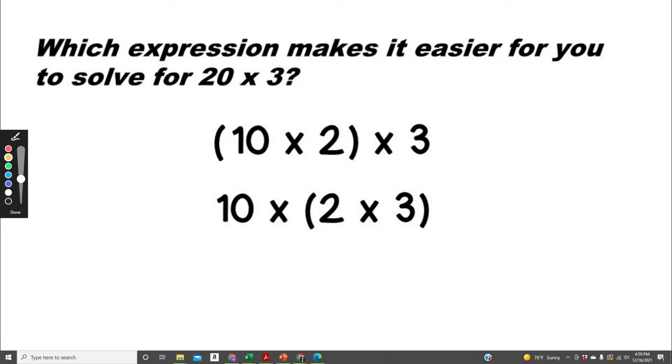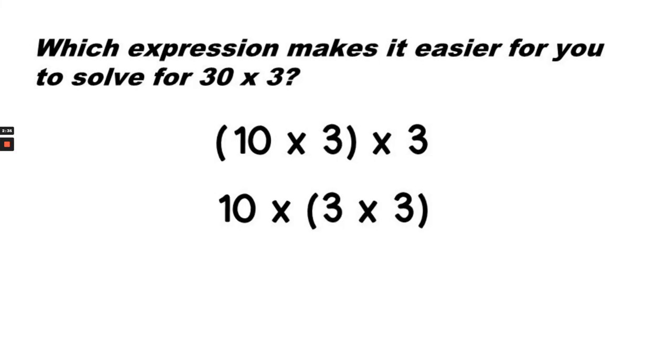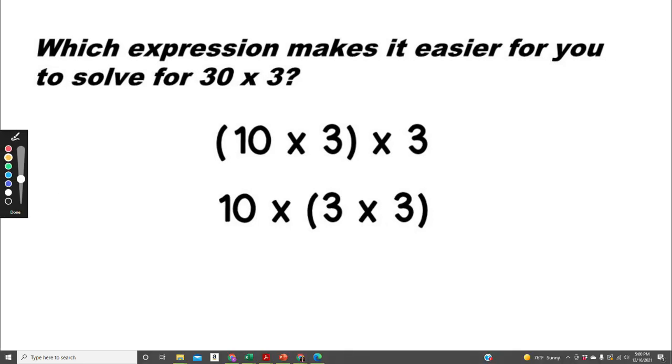There's no correct answer. Whichever is easiest for you is the way that you would break it apart. Which expression makes it easier for you to solve for 30 times 3? Would it be easier to multiply 10 times 3 and multiply that times 3? Or would it be easier to multiply 3 times 3 and multiply that product times 10?